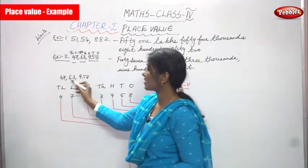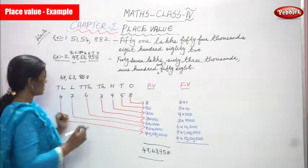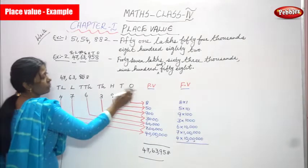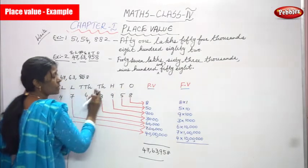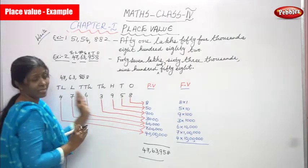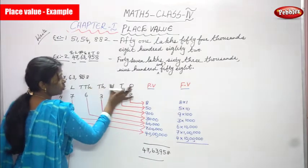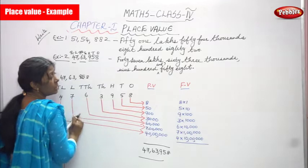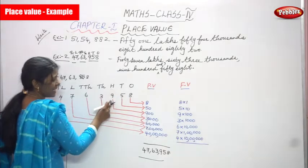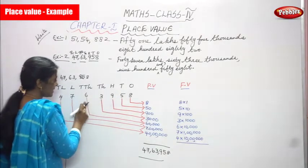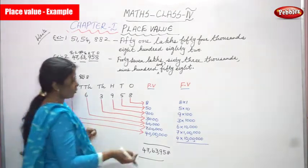Now we move on to place value and face value. First write the number 47,63,958 in the place value chart. You write the column headings: 10 lakhs, lakhs, ten thousands, thousands, hundreds, tens, and ones. Then write each digit according to its position.